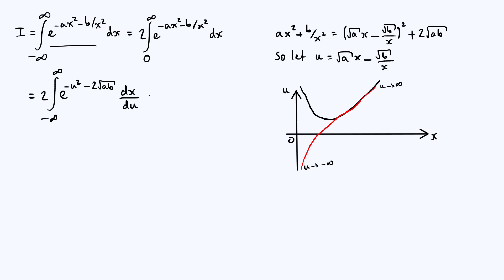So for now, I'm just going to write it as dx by du times du. You can imagine that du's cancelling. And so by multiplying by the factor of dx by du, we have transformed to our new variable.